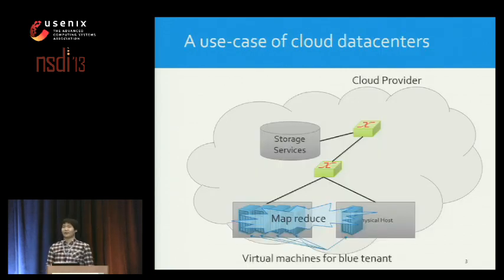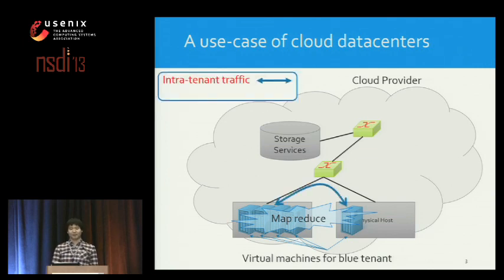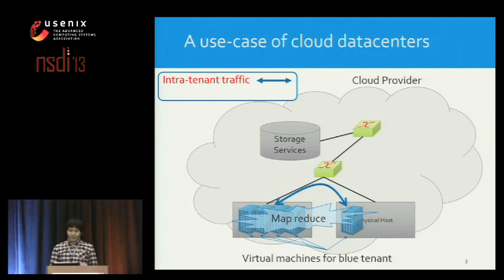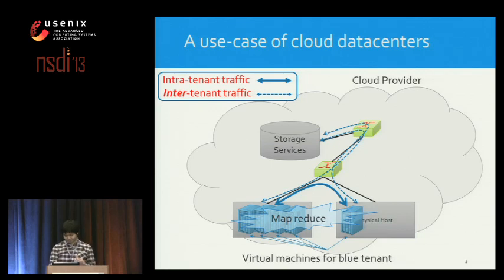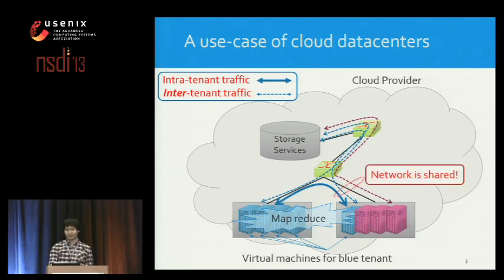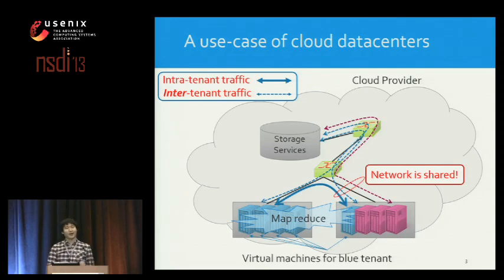Let's consider a popular example use case called MapReduce Data Analytics. A blue tenant is running MapReduce — it generates traffic between its VMs, and we call this intra-tenant traffic. Tenants typically store data in storage services, which is another tenant, so traffic between storage services and VMs is an example of inter-tenant traffic. Because the network is shared, the performance of a blue tenant can vary depending on other tenants' activity, and this is the problem we focus on.